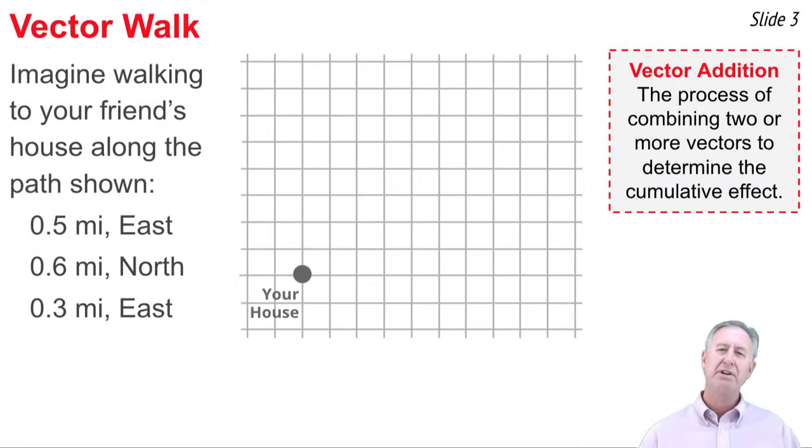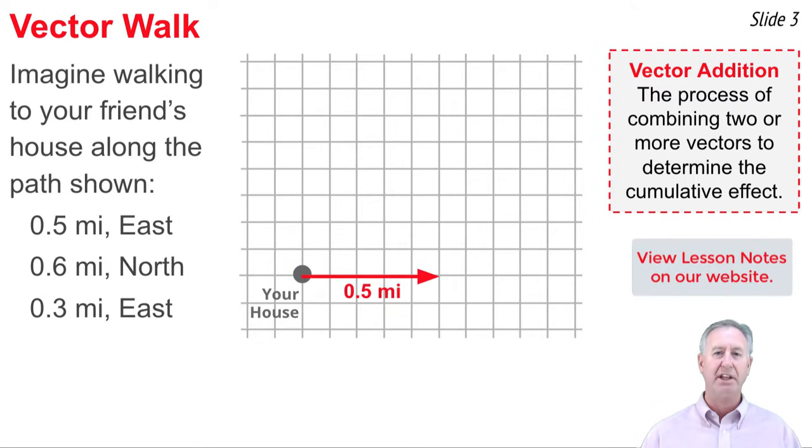Let's suppose that you're going to walk from your house to your friend's house. In the process, you walk a half a mile to the east, then you walk six tenths of a mile north, and then finally you walk 0.3 miles to the east. You've done three individual displacement vectors, and the net result of these three displacement vectors is that you've displaced yourself from your house to your friend's house.